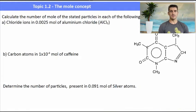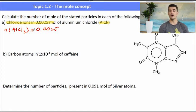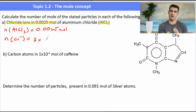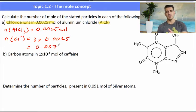Calculate the number of moles of stated particles in the following: chloride ions in 0.0025 mole of aluminium chloride. So we've been given some information about aluminium chloride. The number of moles is 0.0025. We need to work out the number of moles of chloride. So again, we look at the formula. AlCl3 has three chlorides per molecule. So we have three times the number of moles of AlCl3, which is 0.0025. Three times that gives us 0.0075, the number of moles of chloride ions.